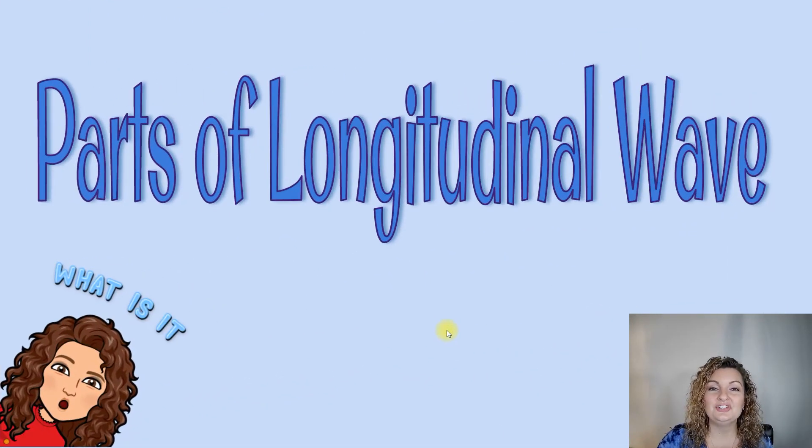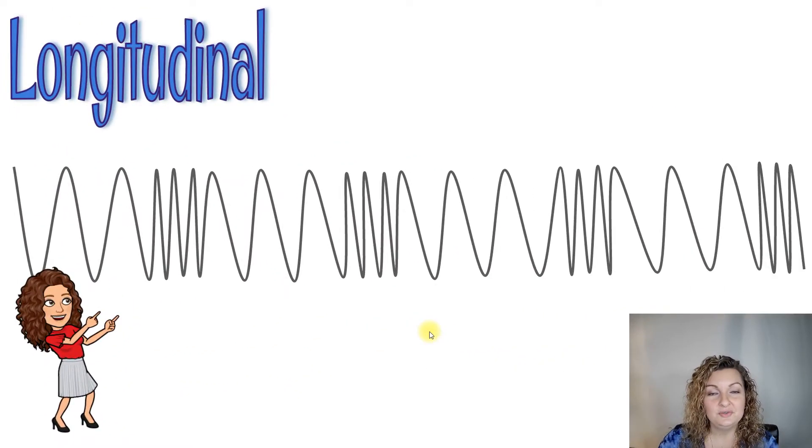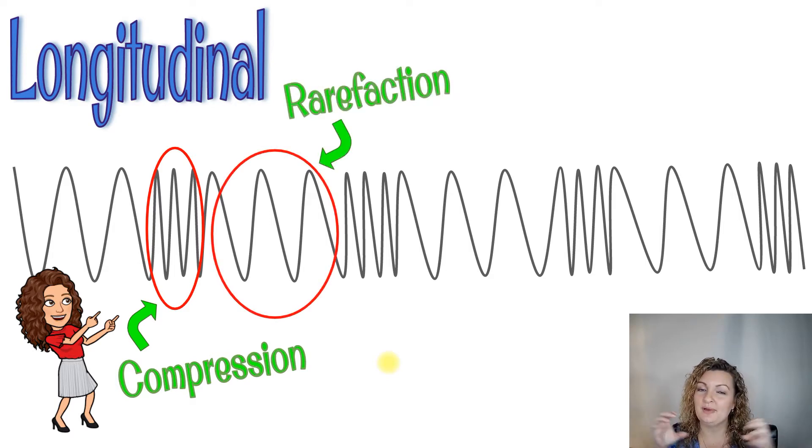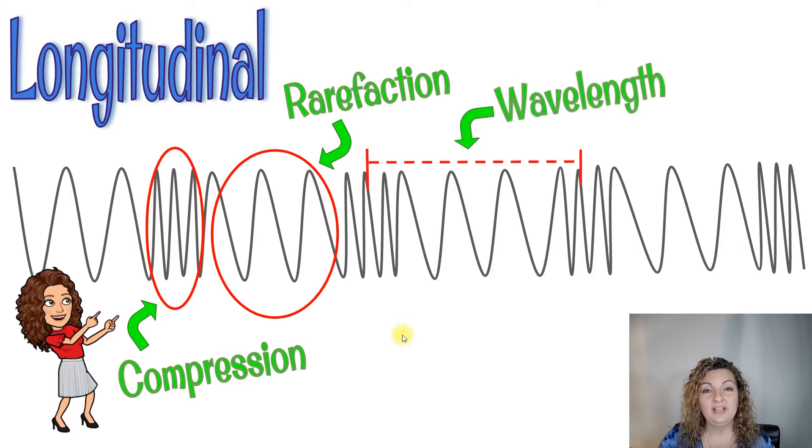Parts of a longitudinal wave. So here's what a longitudinal wave looks like. You're going to see these parts of the wave that look like they're all pushed together and that's called a compression. You're going to find the other parts of the wave where they're stretched apart and that is called a rarefaction. And then in order to measure wavelength on a longitudinal wave we have to go from compression to the next compression. You could also measure it from rarefaction to the next rarefaction.